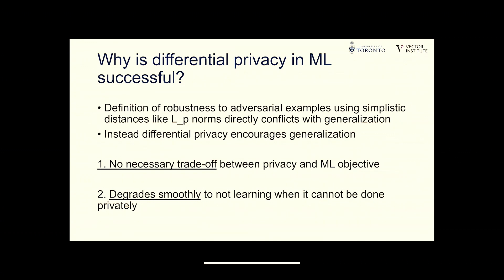In conclusion, when designing trustworthy training algorithms, the definition we work with really matters. With robustness to adversarial examples we haven't made much progress, whereas with differential privacy there is no necessary trade-off between privacy and utility because the notions are very compatible — and when we can't fully achieve privacy, we see a smooth degradation visualized through the tails of the distribution.